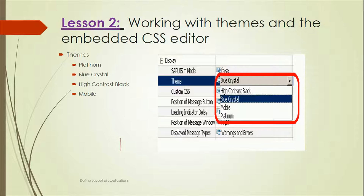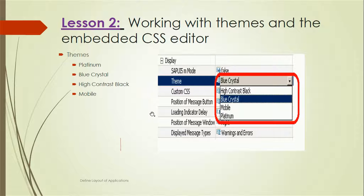Now let's look at working with themes and the embedded CSS editor. These are the four themes available in Design Studio. Whenever we create a new application, under Application Properties in the Display section, there is a Theme option. The four themes are Bluecaster, High Contrast Black, Mobile, and Platinum. Mostly Bluecaster is preferred by SAP due to its various options and its rich look and feel.